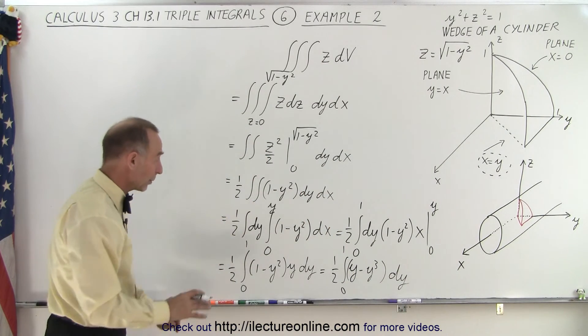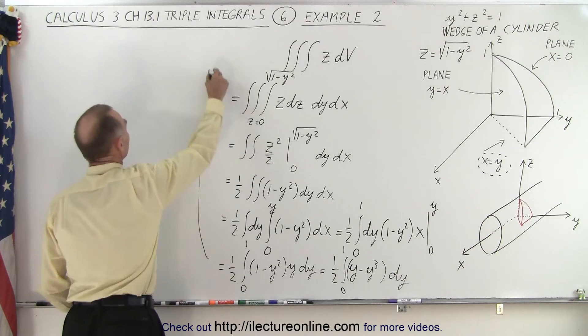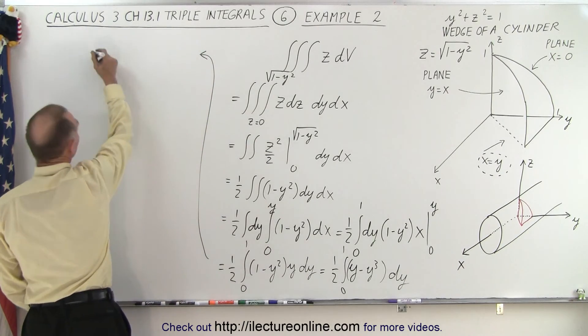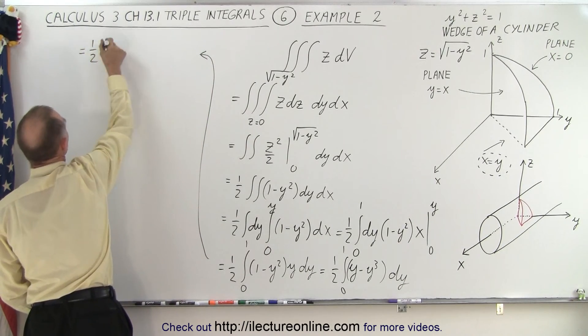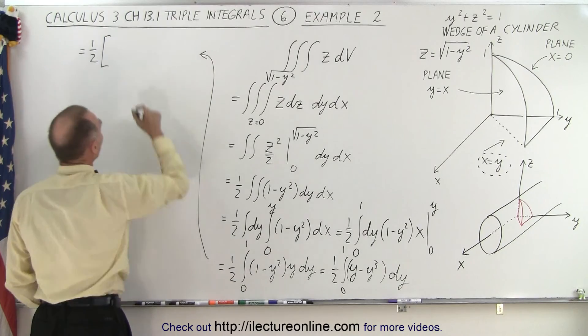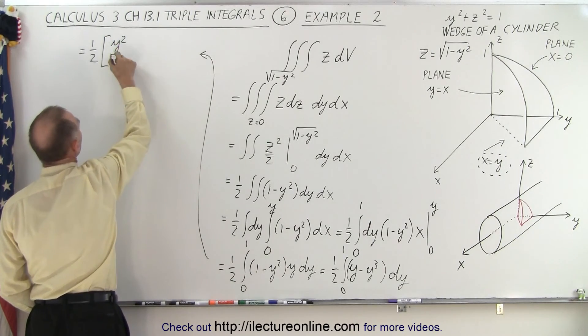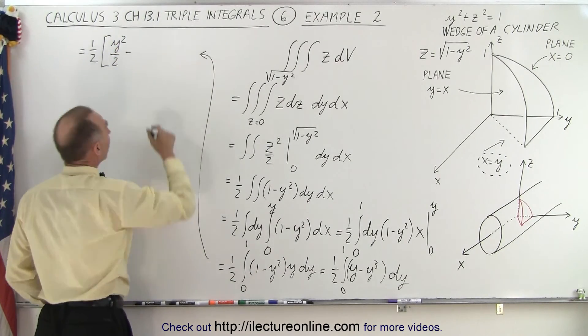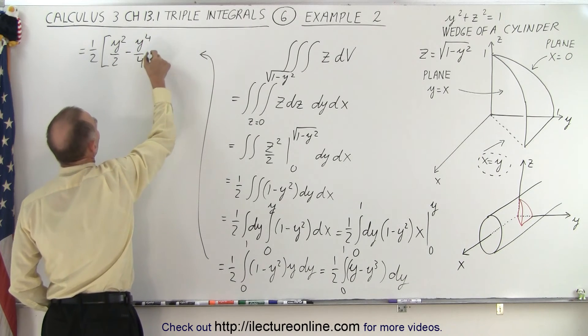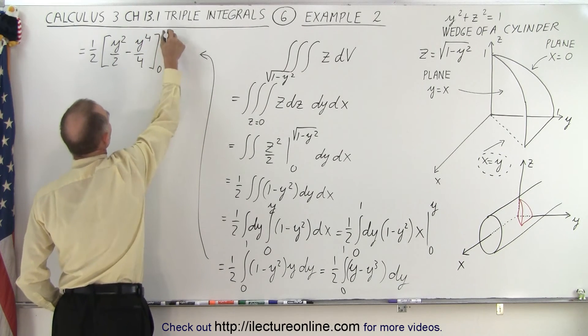All right, now we're ready to integrate that, that would be very straightforward. So now we get this is equal to one half times y squared over two minus y to the fourth over four evaluated from zero to one.